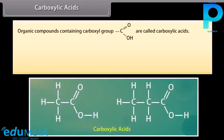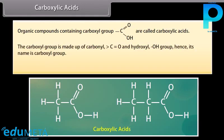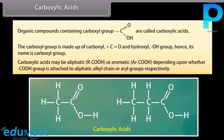Carboxylic acids: organic compounds containing a carboxyl group are called carboxylic acids. The carboxyl group is made up of a carbonyl and a hydroxyl group, hence its name. Carboxylic acids may be aliphatic or aromatic depending upon whether the carboxyl group is attached to an aliphatic alkyl chain or aryl groups respectively.